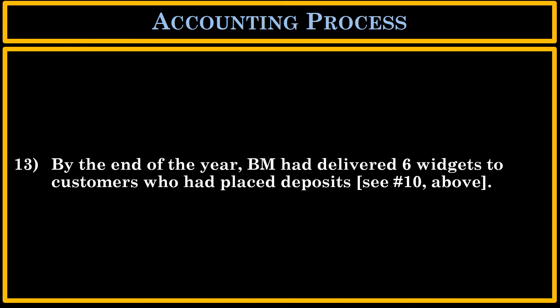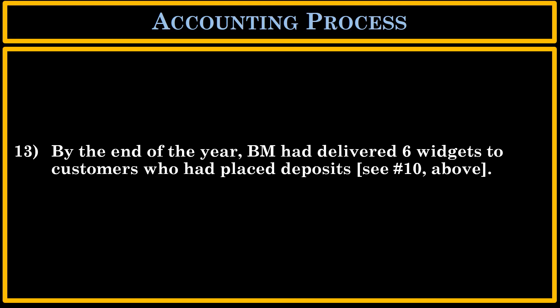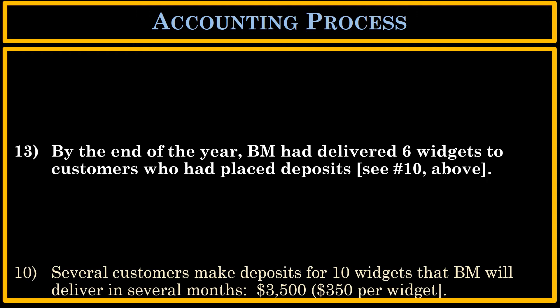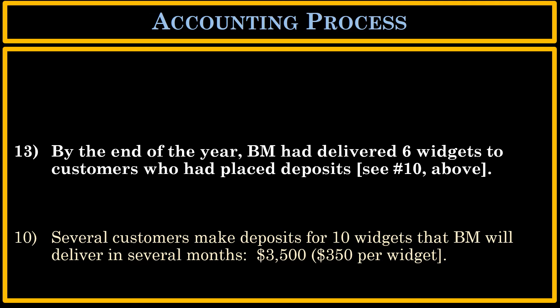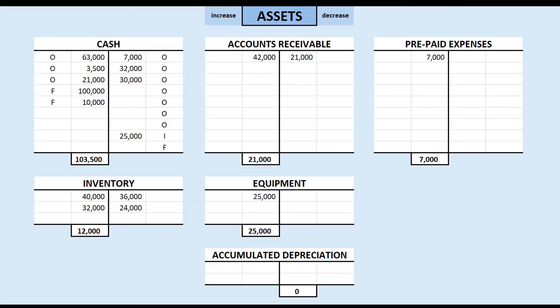In transaction 13, BM delivers six widgets to customers who had placed deposits on those widgets. From transaction 10, several customers made deposits for 10 widgets that BM promised to deliver at $350 per widget. Now BM delivers six widgets, and the customers had paid $350 for each of those widgets, which is $2,100 for six widgets.